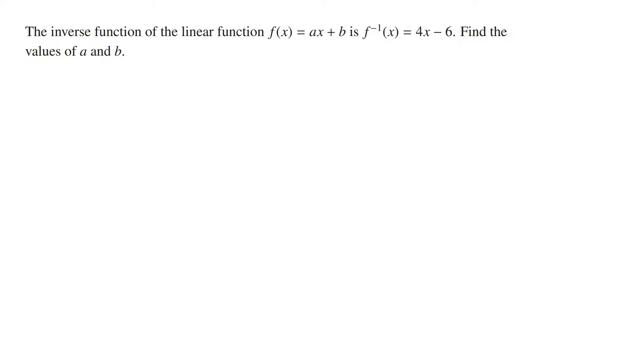Now since we've been given the rule of f inverse, to find the values of a and b we need to find the rule of the inverse in terms of a and b. To do this we let y equal the original function which is ax + b and then we swap the x and y variables and then solve for y. And so we're going to get x equals ay + b. Solving for y, y is going to be x minus b divided by a.